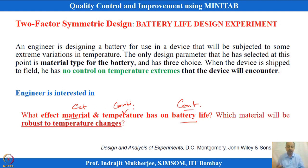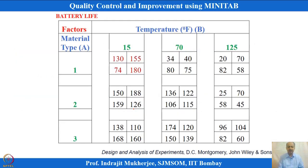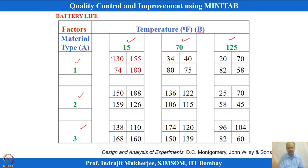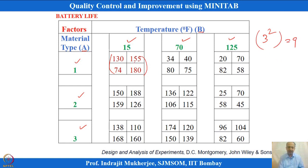An experiment was conducted at 3 levels for material type (factor A) and temperature (factor B) at 3 levels. This is a symmetric design because the number of levels is the same for both factors. The total number of experimental trials is 9 (3x3), with 4 replicates per trial, giving 36 total observations, all collected using randomized experimentation.